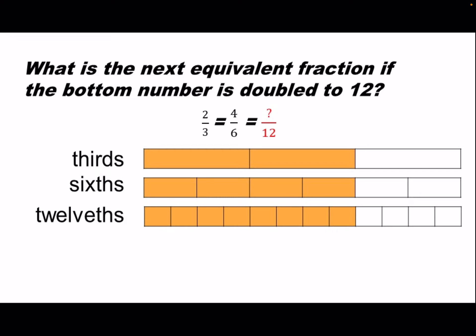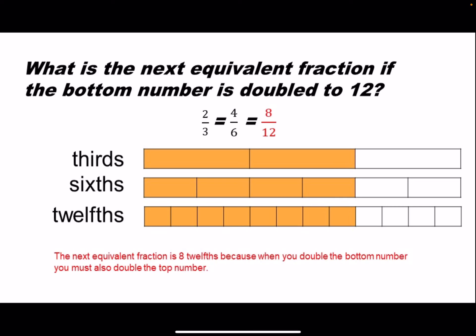Let's look at the strip on the bottom. How many parts are shaded yellow? The next equivalent fraction is eight-twelfths because when you double the bottom number, you must also double the top number. Eight is double four and twelve is double six.